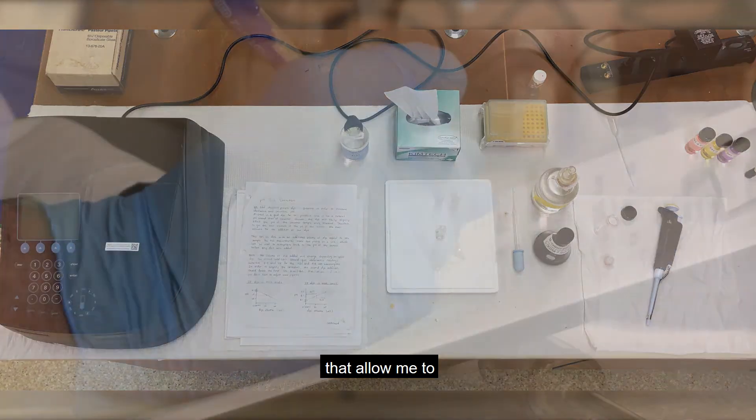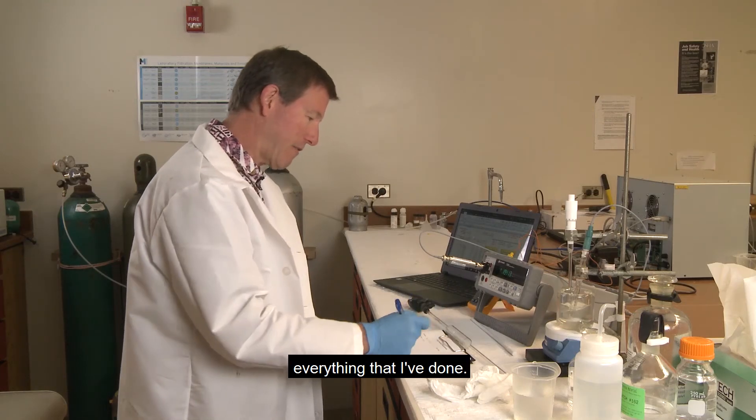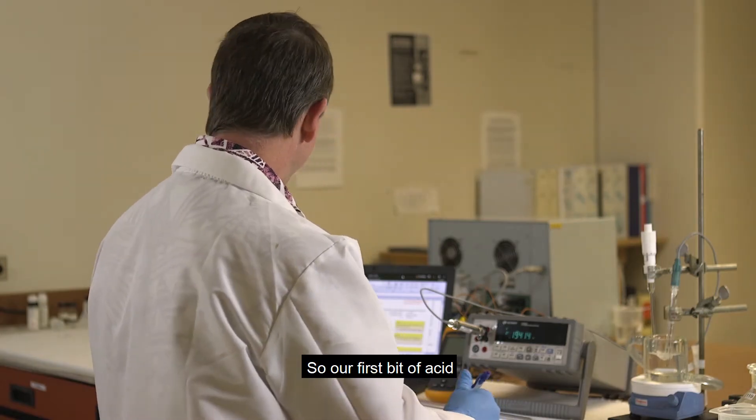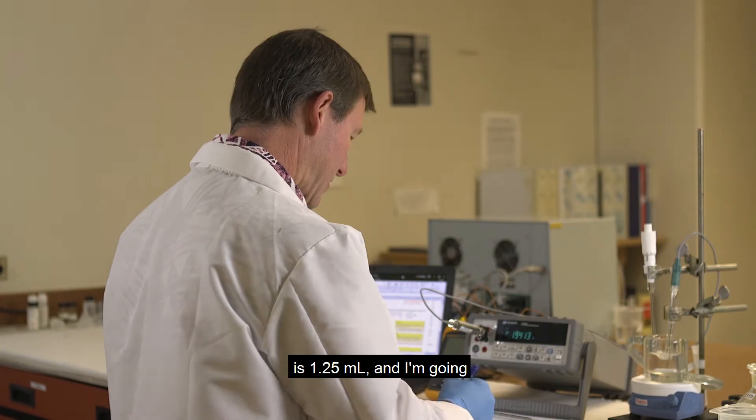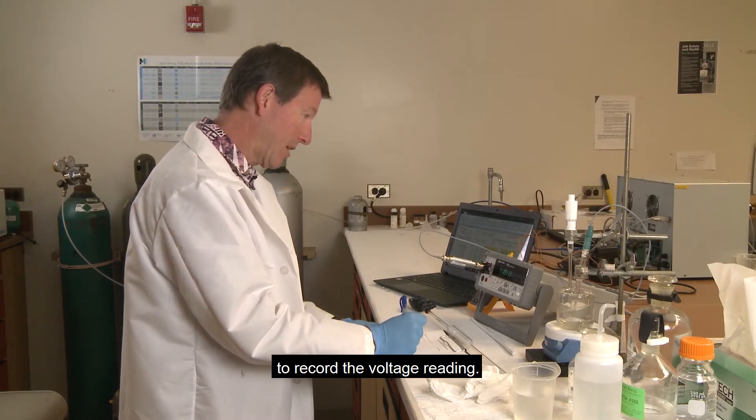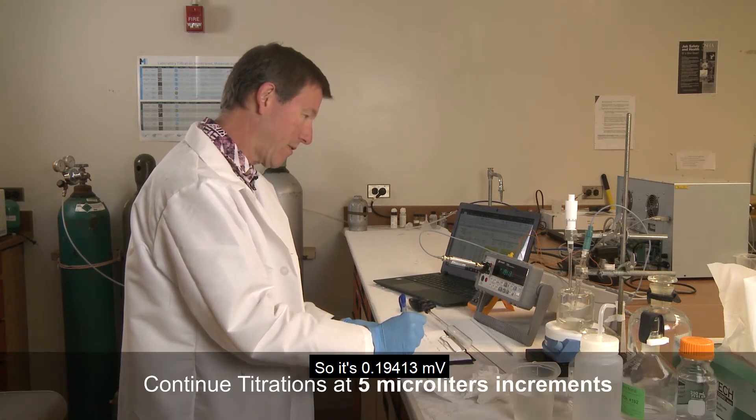I have these alkalinity sheets that allow me to keep a record of everything that I've done. So our first bit of acid is 1.25, and I'm going to record the voltage reading. So it's 0.19413.